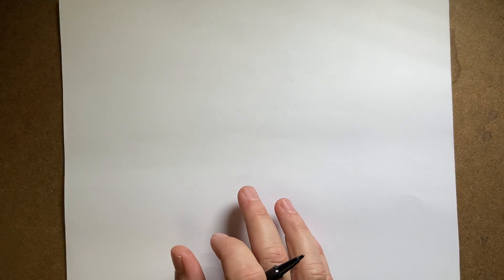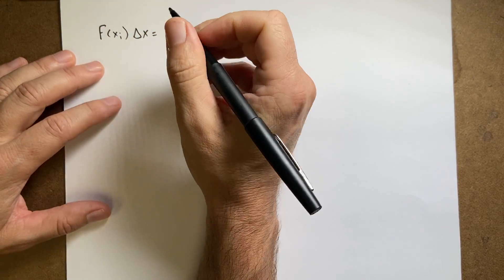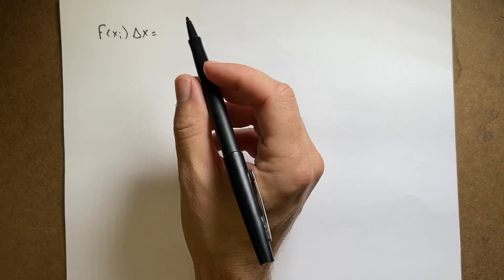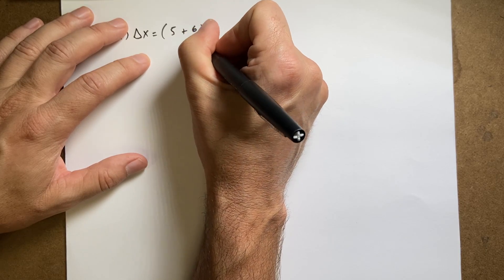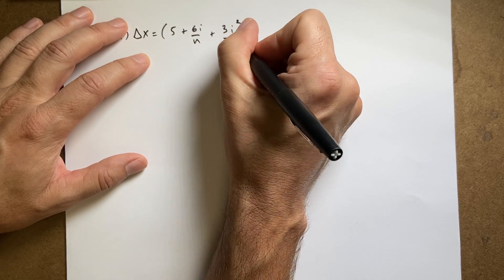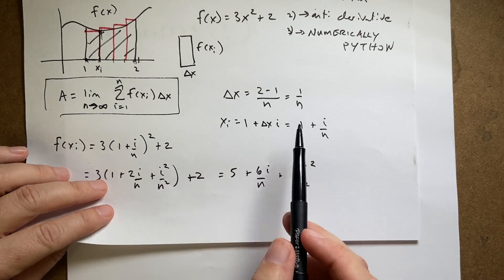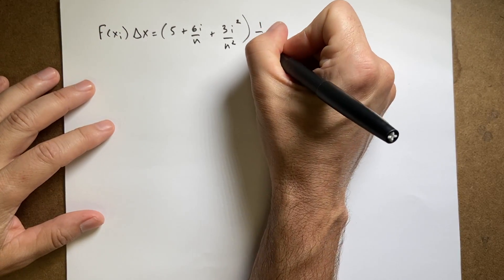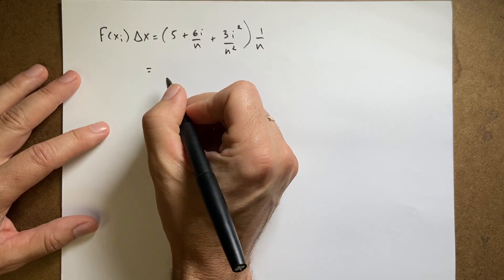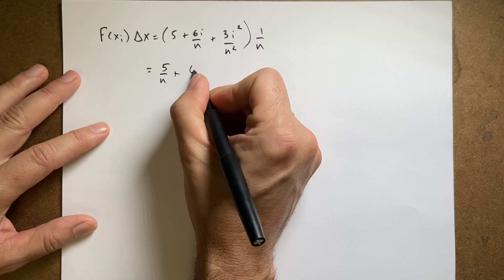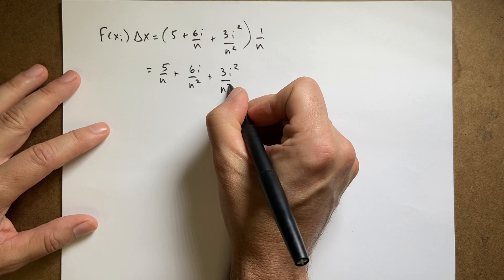Now I need f(xᵢ)·Δx. So f(xᵢ)·Δx = (5 + 6i/n + 3i²/n²) × (1/n). Multiplying through gives: 5/n + 6i/n² + 3i²/n³.